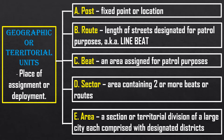To simplify the route: just like a public utility vehicle has a fixed route or road it follows, the route in patrol refers to the streets to be covered within the beat. If you are in the regional mobile force, what are your routes when patrolling in the mountains? The beat is the area assigned for patrol purpose — the area that one, two, or three police officers are assigned to cover.